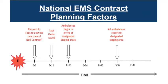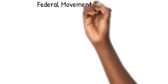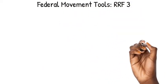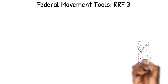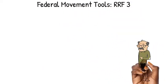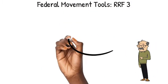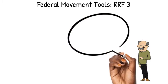When ordering one of these federal teams, key planning factors are: activation takes about six hours, ambulances begin arriving in the area at approximately 18 hours, and all ambulances are staged and ready to go at 36 hours.